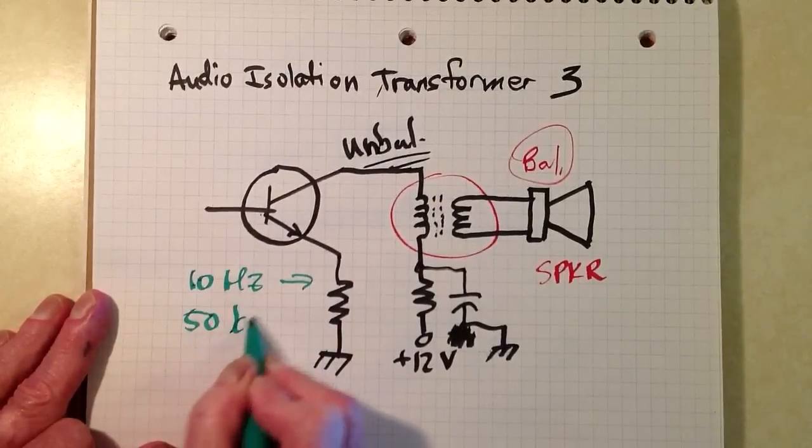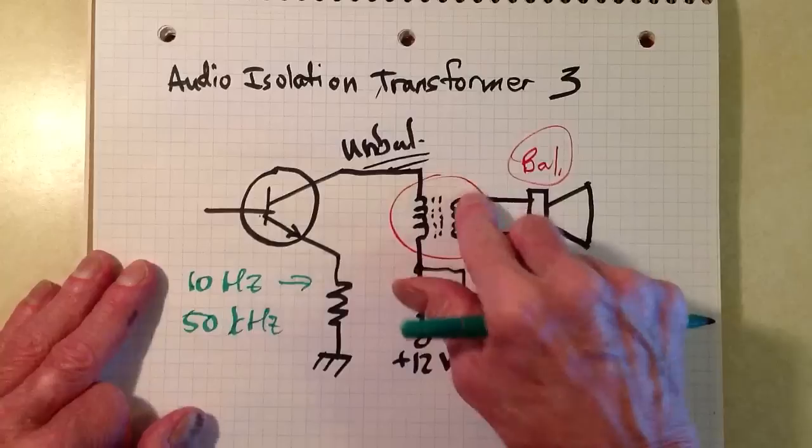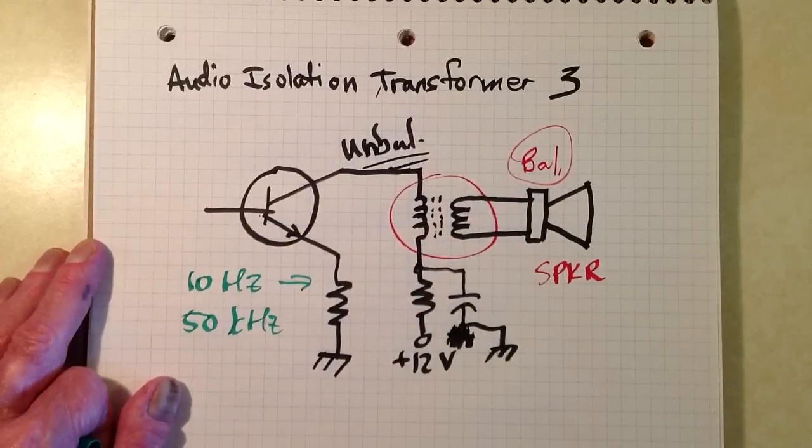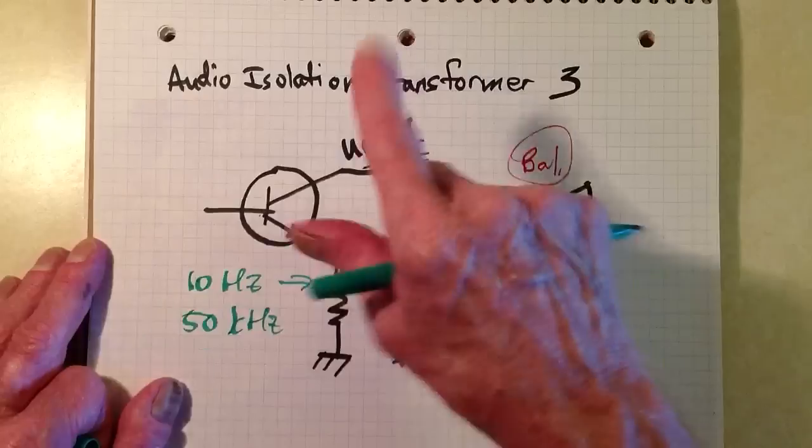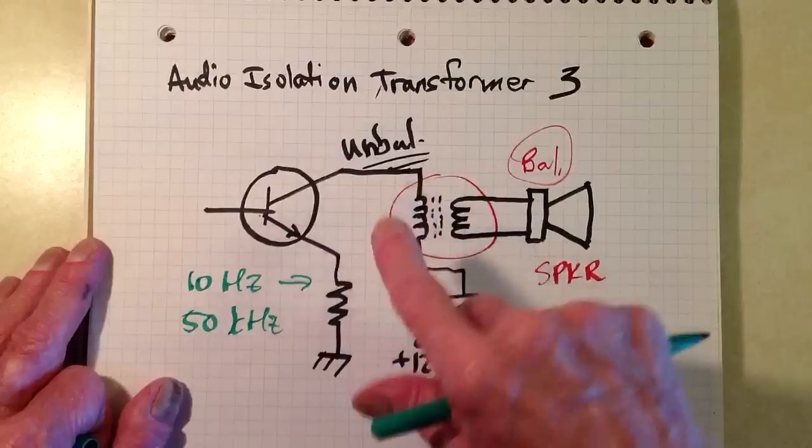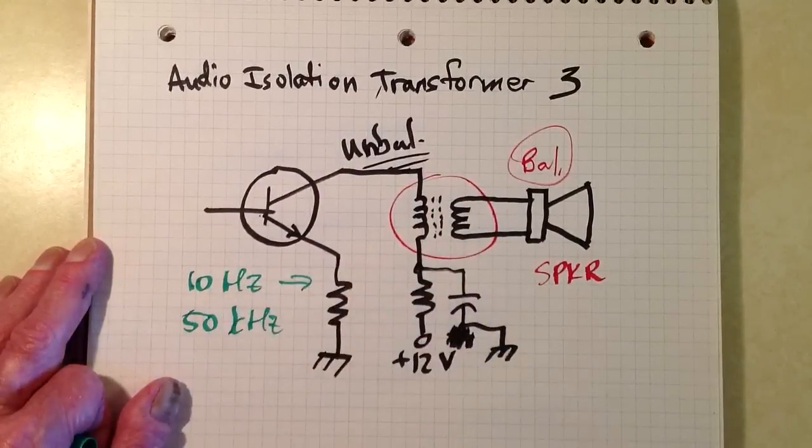A capacitor, however, is going to tend to pass higher frequency signals more than lower frequency ones, and so you're going to get distortion. You're going to get a tinniness in your output with capacitive coupling because the low frequency sounds will be attenuated and the high frequency sounds more easily get through.